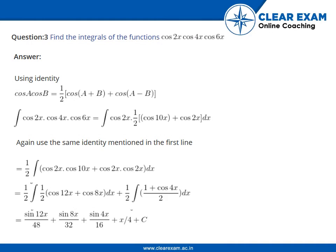Hello guys, welcome back for another question from the chapter integral functions. Let us see what our question says. We have to find the integrals of the function cos 2x cos 4x cos 6x. They are multiplied to each other and we have to find this integration with respect to x.